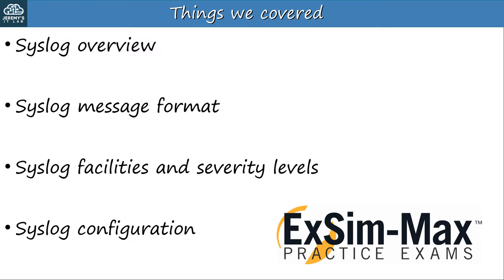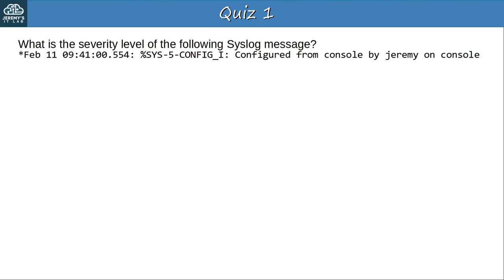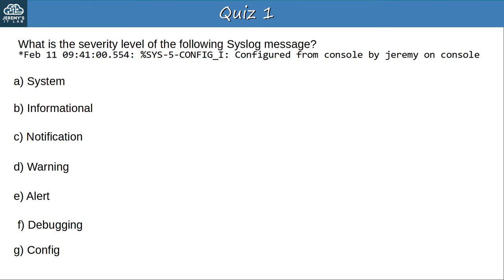Question 1: What is the severity level of the following syslog message? Pause the video now to examine the message and select the correct answer. The answer is C, notification. This is indicated by the 5 between the facility and the mnemonic. This severity level is called NOTICE in the RFC for syslog, but it's also known as notification. In the CLI of Cisco IOS, 'notification' is used.